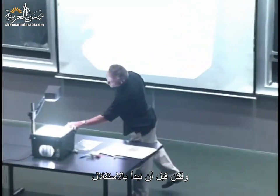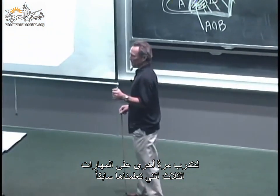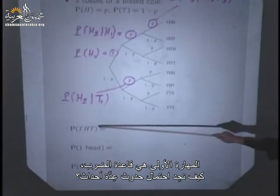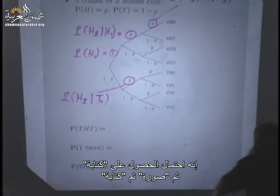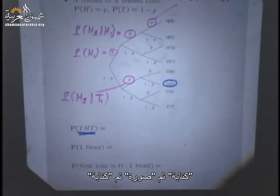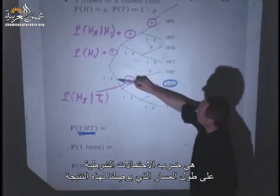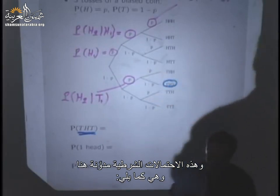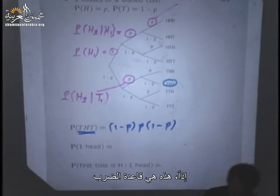Before we get to independence, let's practice the three skills we covered last time on this example. The first skill is the multiplication rule: how do you find the probability of several things happening? For example, the probability of tails followed by heads followed by tails. We calculate this by multiplying conditional probabilities along the path, giving (1−P)·P·(1−P).